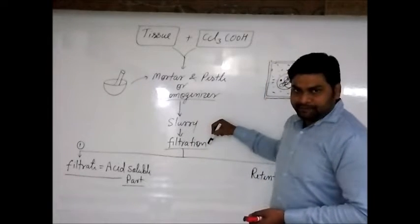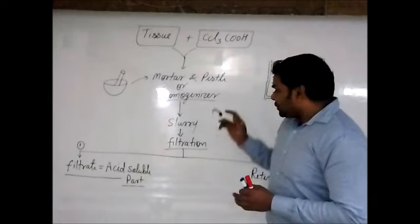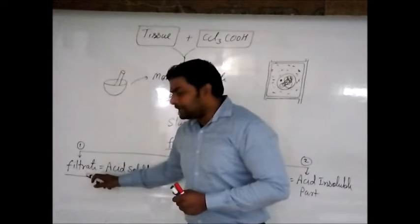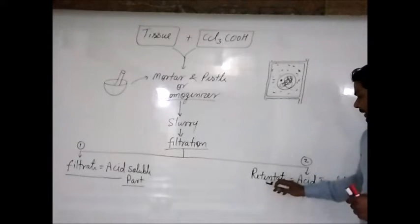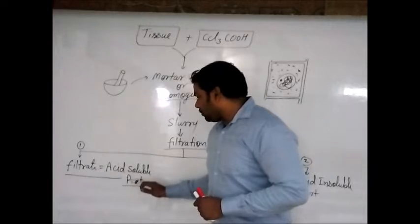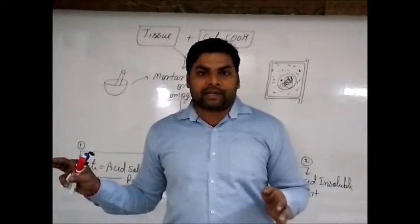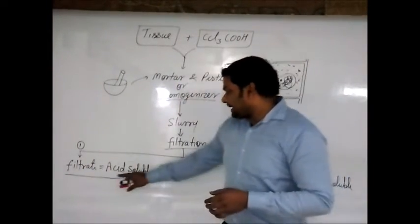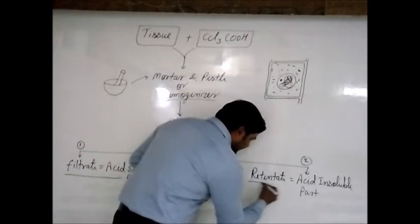Then we go through filtration. For filtration you can use cheesecloth or filter paper. When we go through filtration, we get two different parts: one part which is filtered is called the filtrate, and another part which is not filtered is called the residue or retentate. The retentate is called the acid-insoluble part, while the filtrate is called the acid-soluble part. So filtration gives us these two different parts — the acid-soluble filtrate and the acid-insoluble retentate.